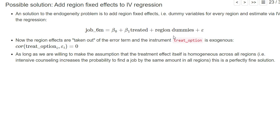So that would be a solution to the problem. We would estimate this regression by just adding region dummies as a shortcut form, where treat_option is the excluded instrument. Now since the region fixed effects are taken out of the error term, treat_option is not correlated with the remaining error term, so it's now exogenous.